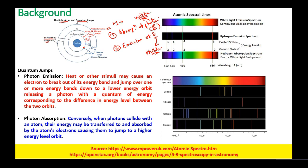Electrons may gain energy and go to higher energy levels, absorbing energy during that state, and when they come back from the excited energy levels to the ground state, they emit the photon. So there will be emission of light in photon emission and absorption of light in photon absorption.